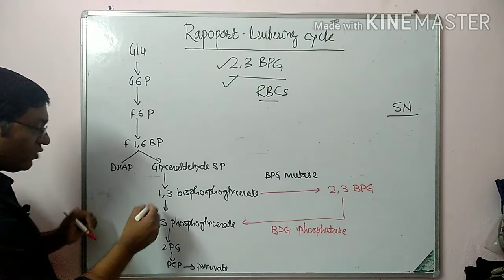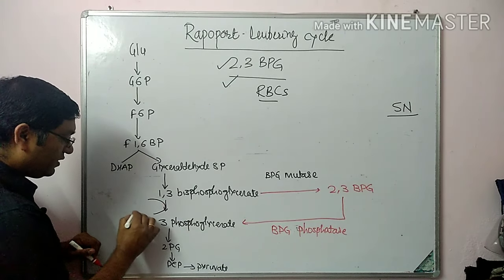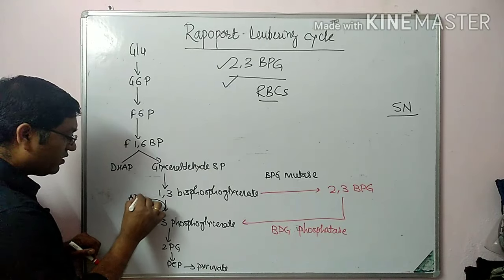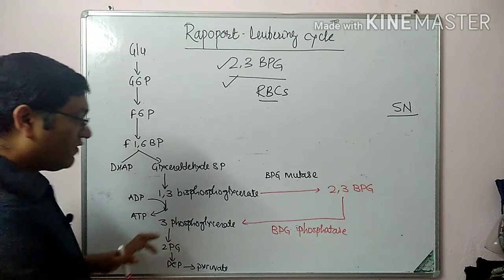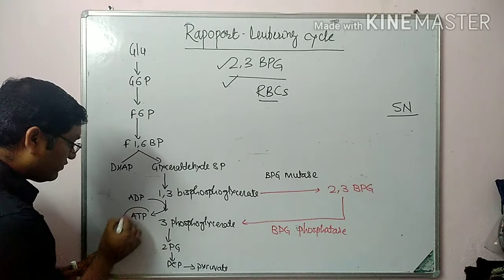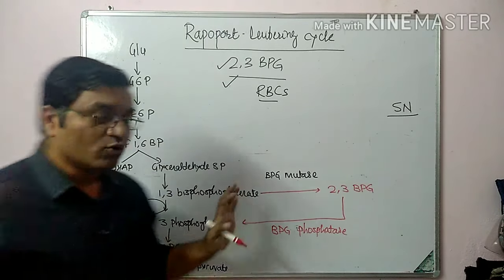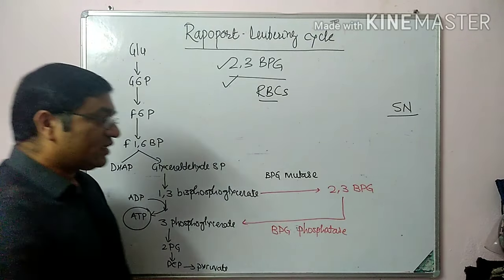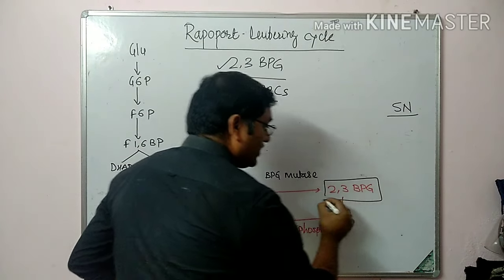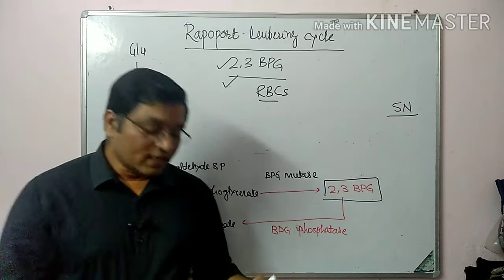In normal glycolysis, there is production of ATP — this is an example of substrate-level phosphorylation. Via the Rapoport-Luebering cycle pathway, there is less formation of ATP — one ATP less is formed. But in erythrocytes, the compound 2,3-bisphosphoglycerate is very, very important.